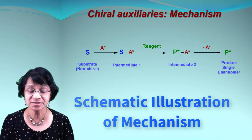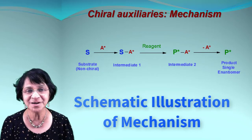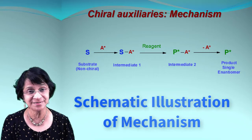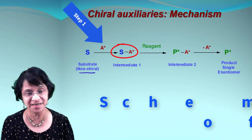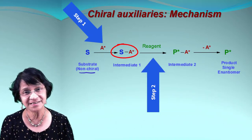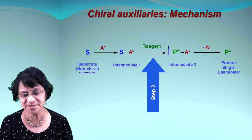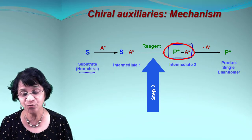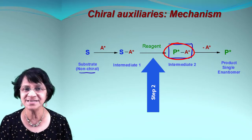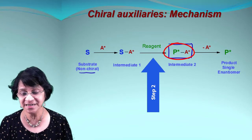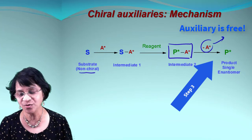Here is the simple way to explain the mechanism visually. We have the non-chiral substrate, which binds to the auxiliary to form intermediate one. Then the reagent — which could be a fragment or branch of a molecule — reacts to form intermediate two, which contains the desired product but still has the chiral auxiliary attached to it.